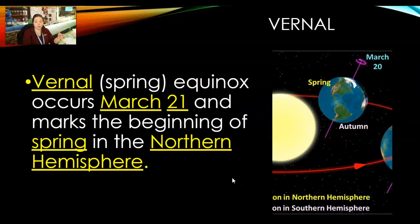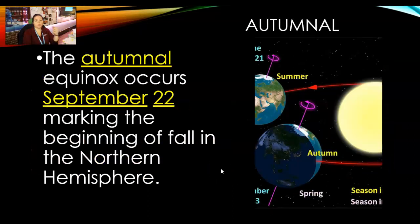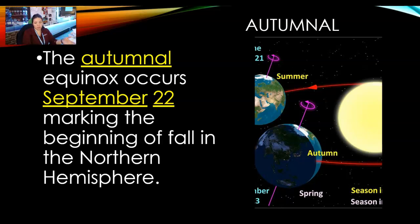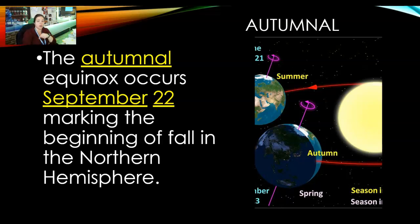There are special equinoxes. The spring equinox, or vernal equinox, is March 21st — coming up real soon — and it marks the beginning of spring in the northern hemisphere. Then there's the autumnal equinox, or fall equinox, September 22nd, marking the beginning of fall in the northern hemisphere. The reverse is true for the southern hemisphere — their spring equinox is our fall equinox.